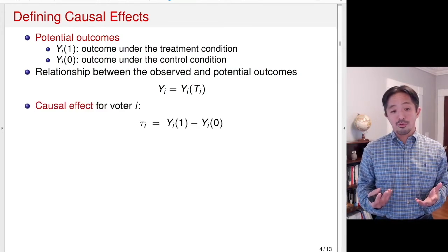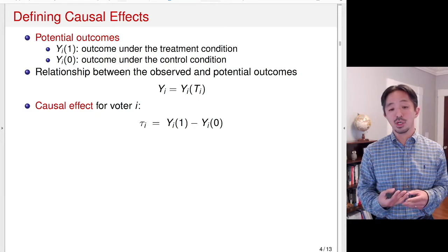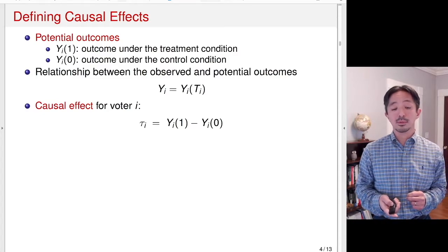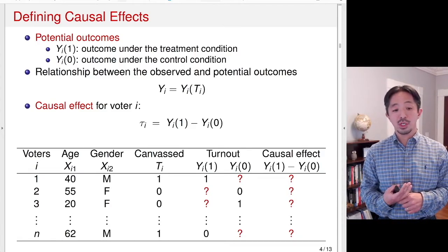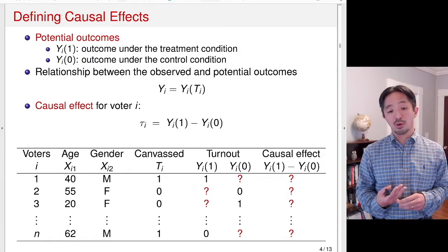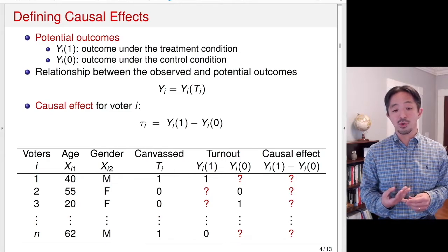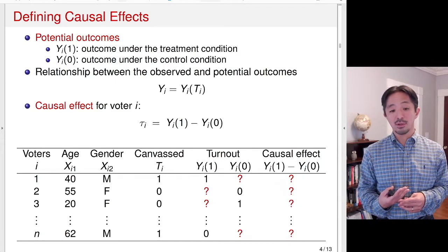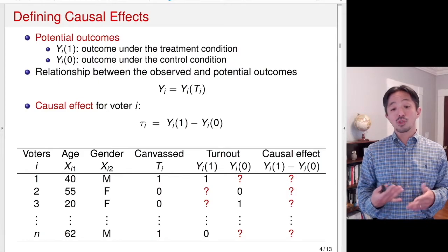Now we can define the causal effect using these two potential outcomes, Y(1) and Y(0). We define for each voter τ_i, the individual causal effect, as the difference between these two potential outcomes. Let's illustrate this using the following table. There are N rows, each corresponding to each voter. We observe two pretreatment covariates — age and gender. For example, the first voter is 40 years old and male. We also observe treatment variable Ti — whether the voter is canvassed or not.